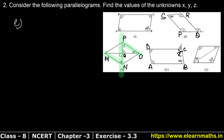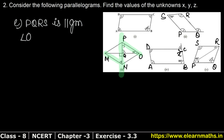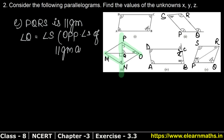Let's name it P, Q, R, and S. Because PQRS is a parallelogram, angle Q equals angle S. Why? Because opposite angles of a parallelogram are equal. So angle Q is 112 degrees and angle S is y, therefore y equals 112 degrees.